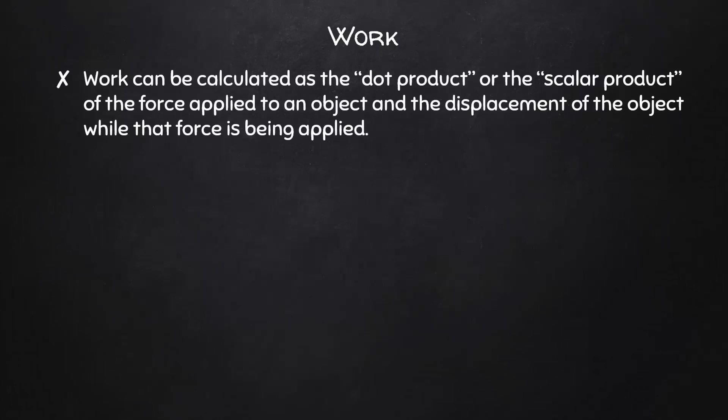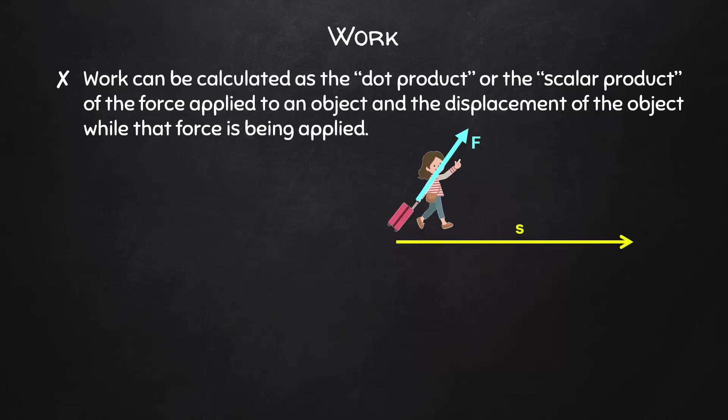Work can be calculated as the dot product or the scalar product of the force applied to an object and the displacement of the object while that force is being applied. Here's a woman pulling some rolling luggage. She exerts a force in the direction of her arm, and while she exerts that force, she and the luggage end up with some displacement. In this case, the woman's force and the displacement of the luggage are not in the same direction — instead, there is some angle theta between them. The equation for work, therefore, is force times displacement times the cosine of theta.